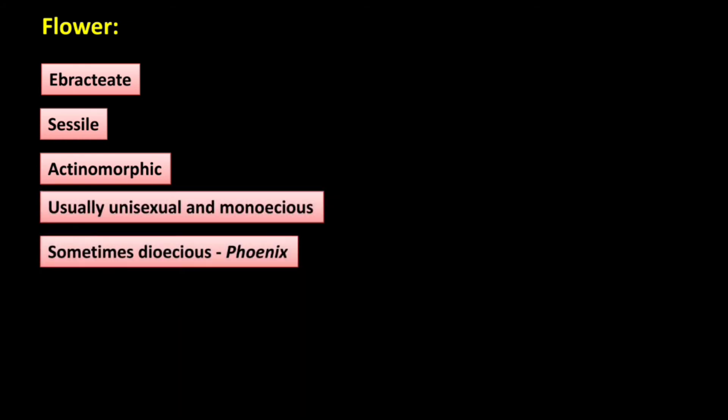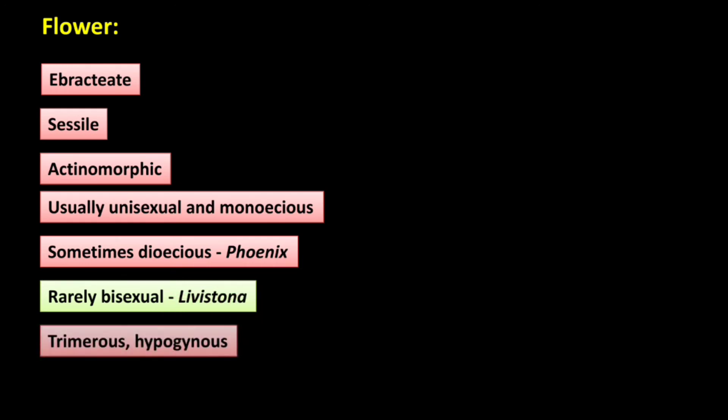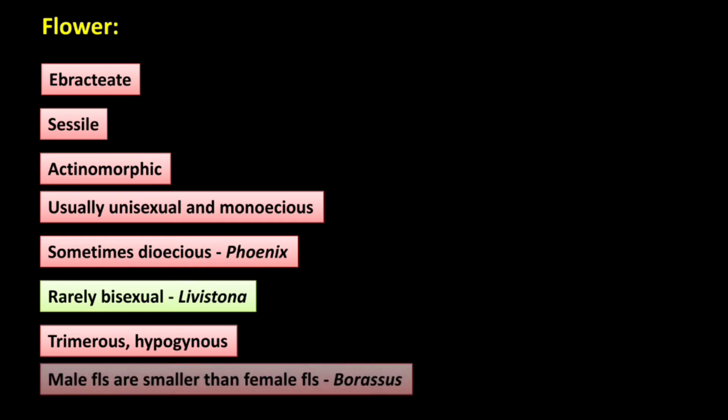Let us study the flower of Arecaceae. The flower is ebracteate, sessile — meaning no stalk or pedicel — and has radial symmetry, that is actinomorphic. Usually unisexual and monoecious, sometimes dioecious as in Phoenix or date palm, and rarely bisexual as in Livistona. Flowers are trimerous and hypogynous. Male flowers are smaller than female flowers, for example in Borassus.